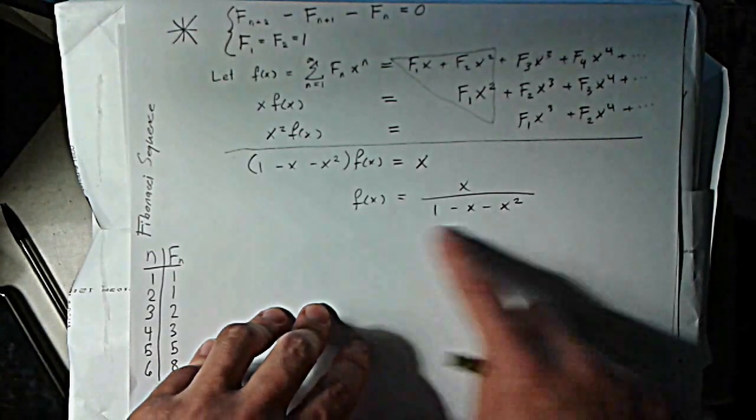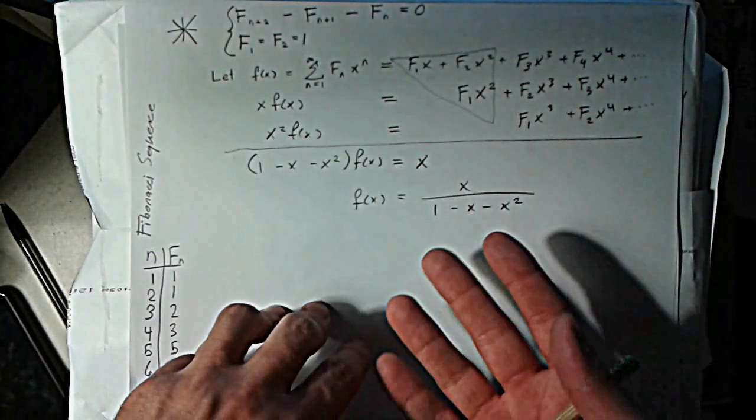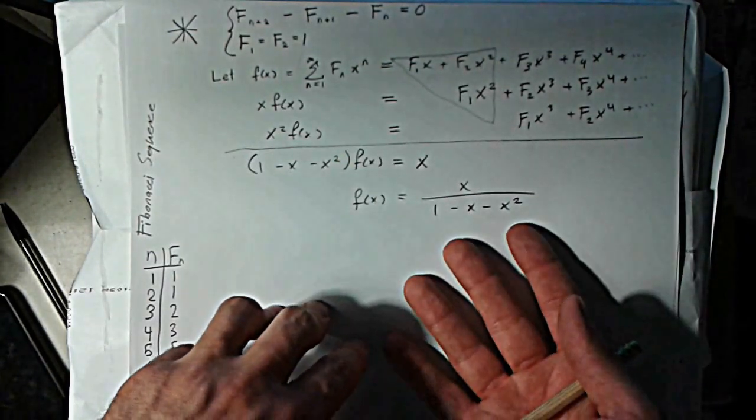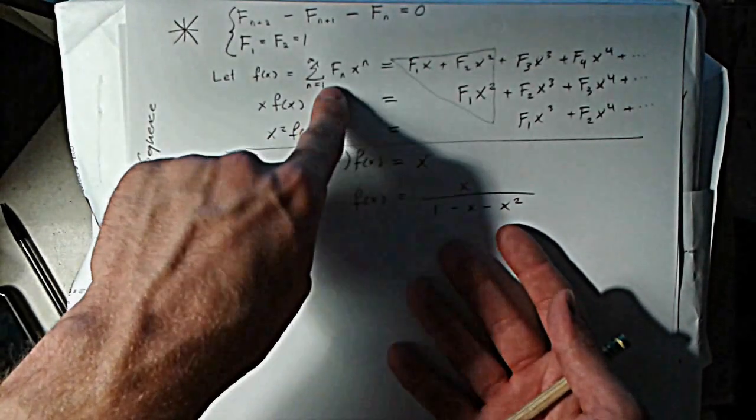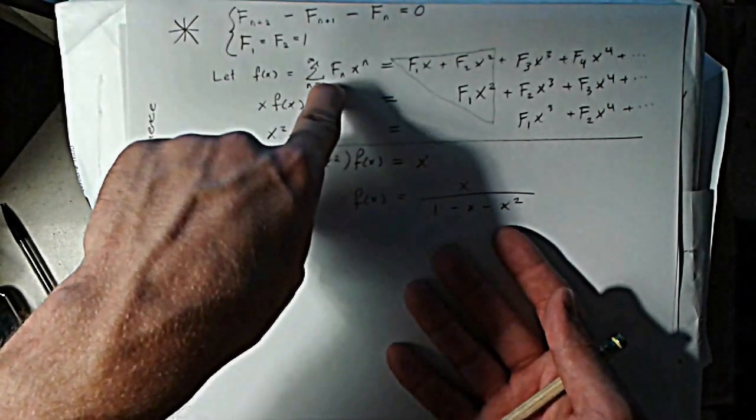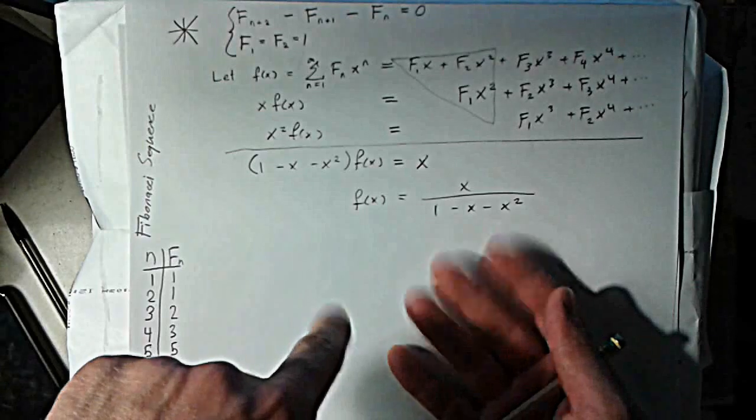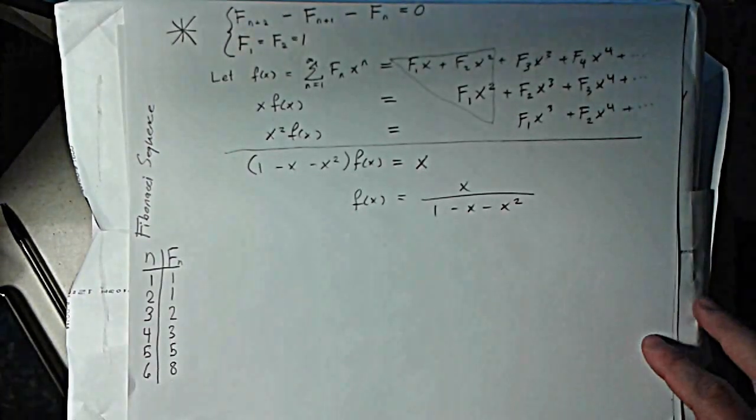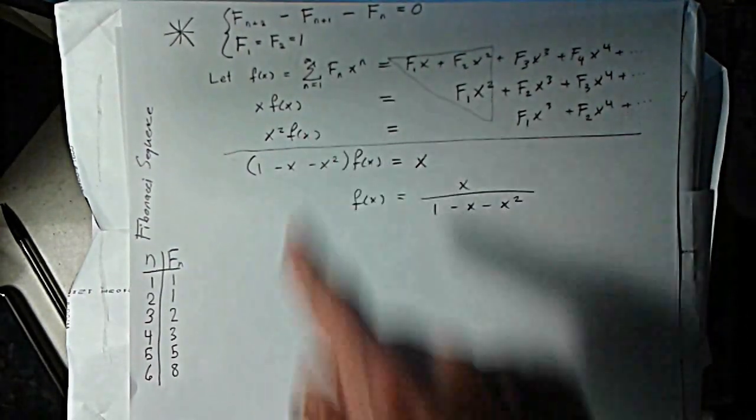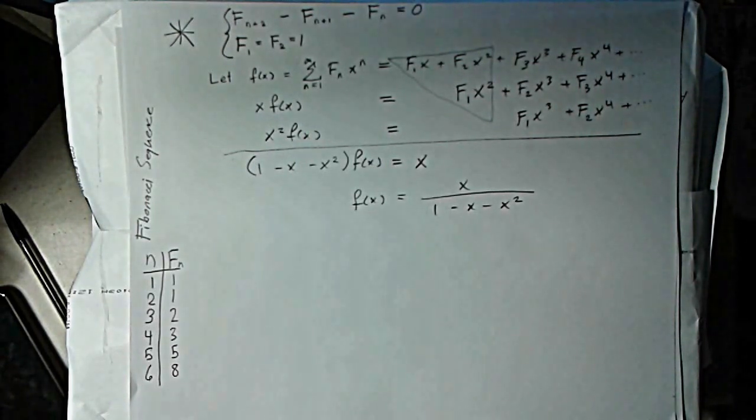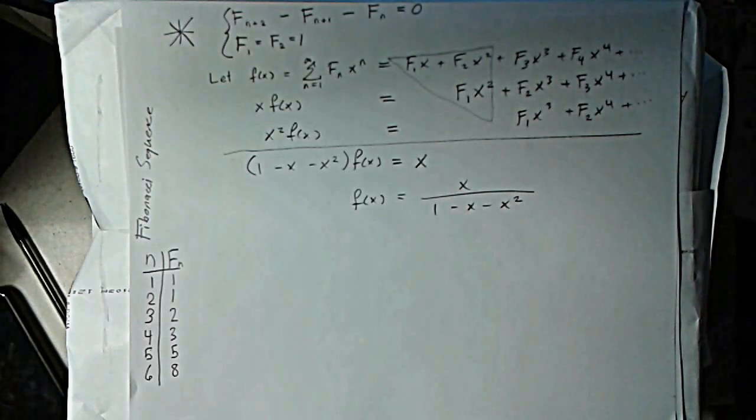So anyway, at this point, all we really care about is we don't really care about the convergence of this series anyway, since all we care about is the sweet, juicy coefficients here. That's what we're trying to solve for. As long as this thing does have a neighborhood of convergence around 0, which it does.